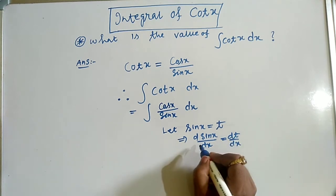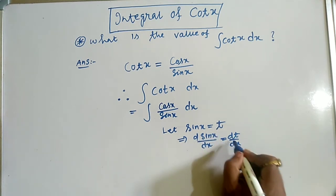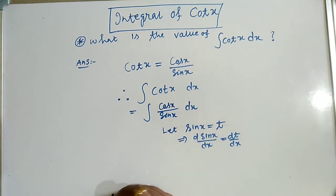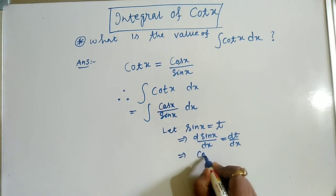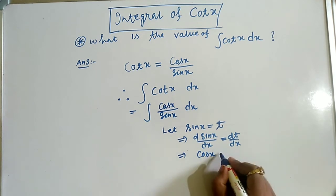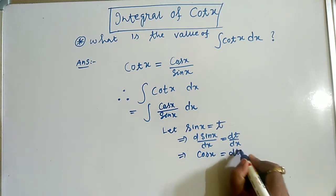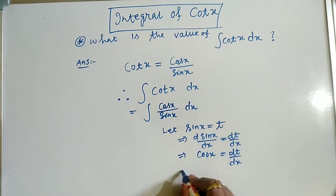d by dx of sin(x), d by dx of t. So the derivative of sin(x) with respect to x is cos(x) equals dt by dx.